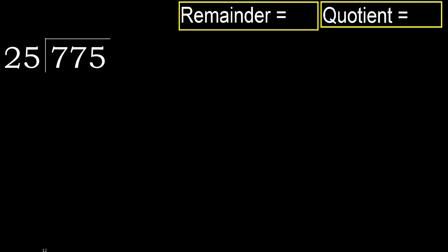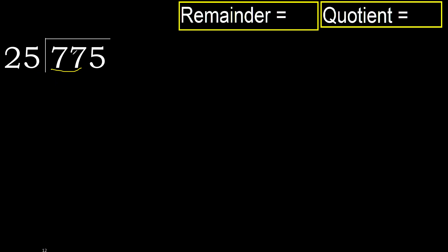775 divided by 25. 7 is less, therefore next. 77 is not less, therefore with 77.